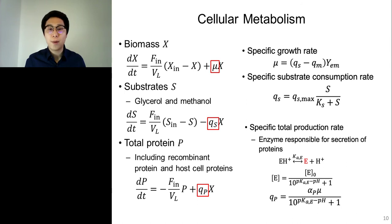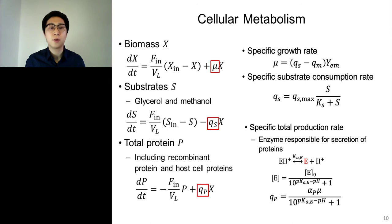Differential balances for concentration of biomass, substrates — which are glycerol and methanol — and total proteins, including both recombinant protein and host cell proteins, are given as equations on the left of the slide. The specific growth rate is modeled to be proportional to the specific substrate consumption rate minus the maintenance coefficient, and the specific substrate consumption rate is modeled with the Monod equation. The specific production and host cell protein secretion rates are lumped together and modeled to be proportional to the specific growth rate. It was also observed that the pH of the medium affects total protein concentration. To account for this pH effect, it was assumed that a hypothetical enzyme is responsible for protein secretion and is only active in its deprotonated form. The active portion of total enzyme is described with the equation in the slide, and its proportion is included in the specific total production rate.